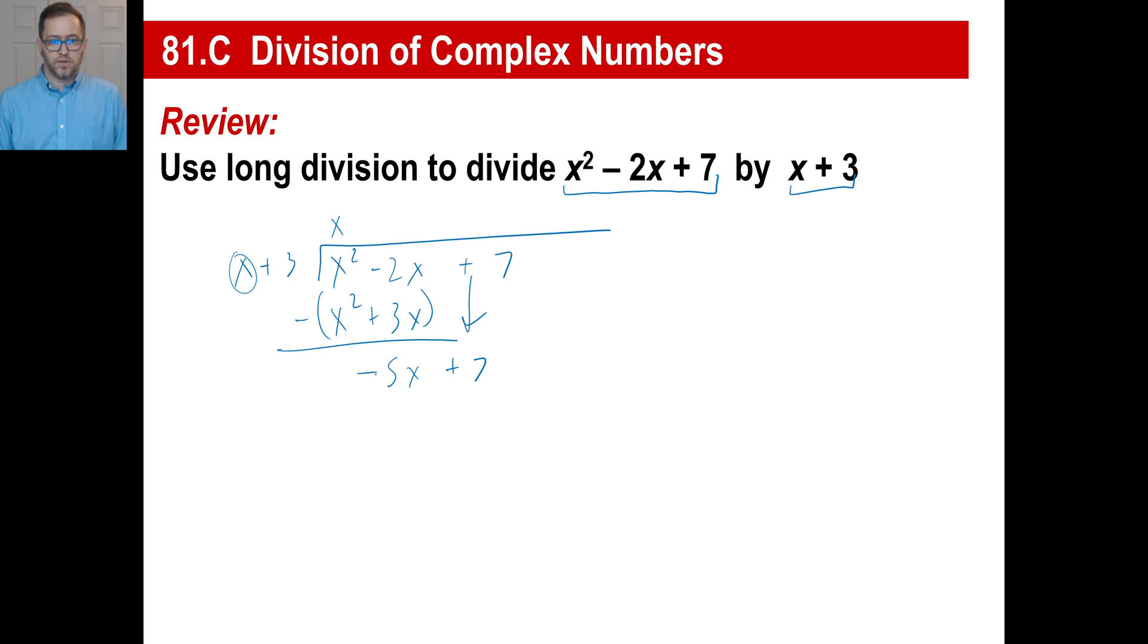So x into negative 5x is negative 5, and negative 5 times that. Of course, this will always go away. Negative 5 times 3 is negative 15, that gets subtracted, gone. 7 minus negative 15 is 22, and then we have a little left over here, so plus 22 over x plus 3. So we always have a little denominator, unless it goes perfectly in there. This is always the denominator, all right?